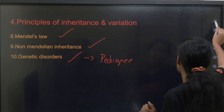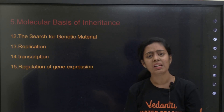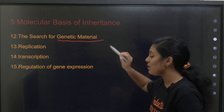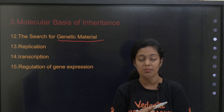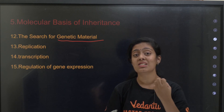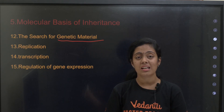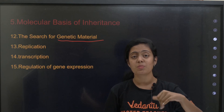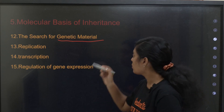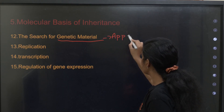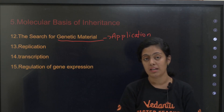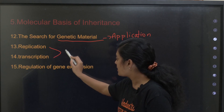The next very high-weightage chapter is molecular basis of inheritance. The first topic is the search for genetic material — how was DNA discovered as genetic material? You need to study three experiments: Griffith's experiment, Avery/Oswald's experiment, and the Hershey-Chase experiment. Application-based questions will be asked directly based on these experiments, not just factual recall.